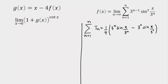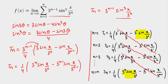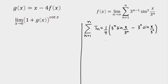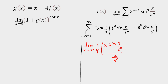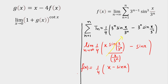So the summation equals (1/4)[3^n·sin(x/3^n) − sin(x)]. Now taking the limit as n → ∞: as n → ∞, x/3^n → 0, so we multiply and divide by x to apply the standard limit sin(θ)/θ → 1 as θ → 0. This gives (1/4)[x − sin(x)]. So f(x) = (1/4)(x − sin x). Once we have f(x), we can now calculate g(x).